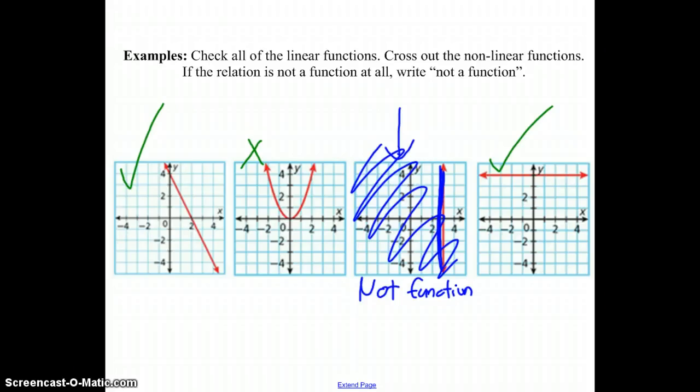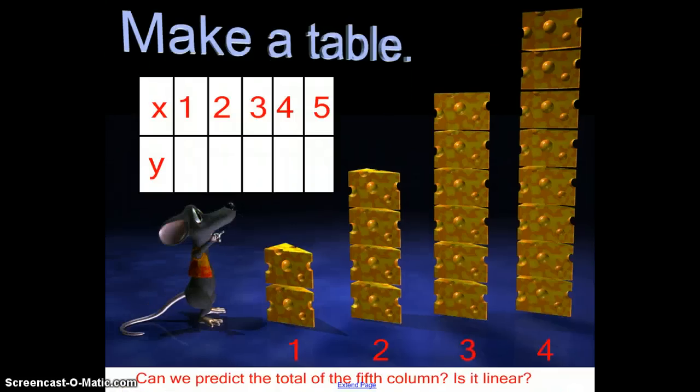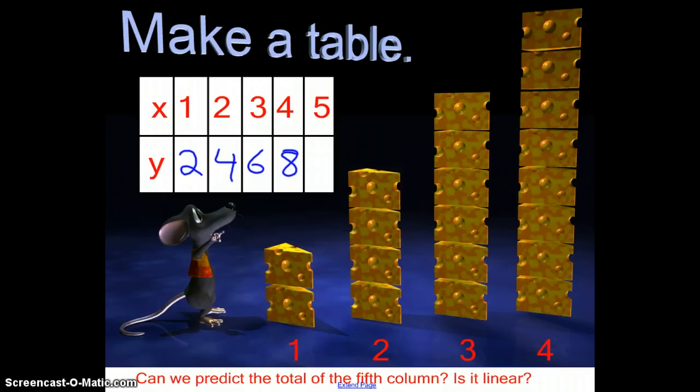Alright. So the next time we look at linear functions, we've got to look at them as a relationship or a model. So we're going to look at this table here. The first time the mouse had cheese, he had two pieces. The next time he had four, the next time he had six, and the next time he had eight. Think about the kind of line these points would make. One, two, two, four, three, six, and four, eight. Those go up by the same amount each time.